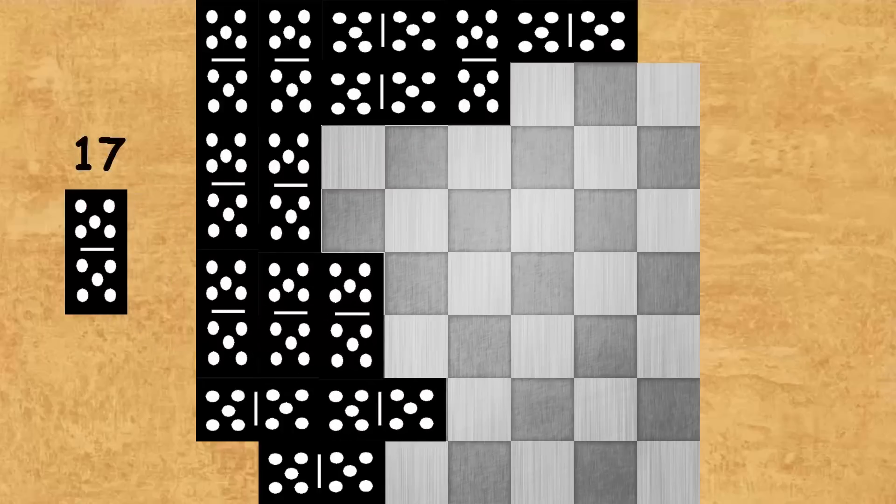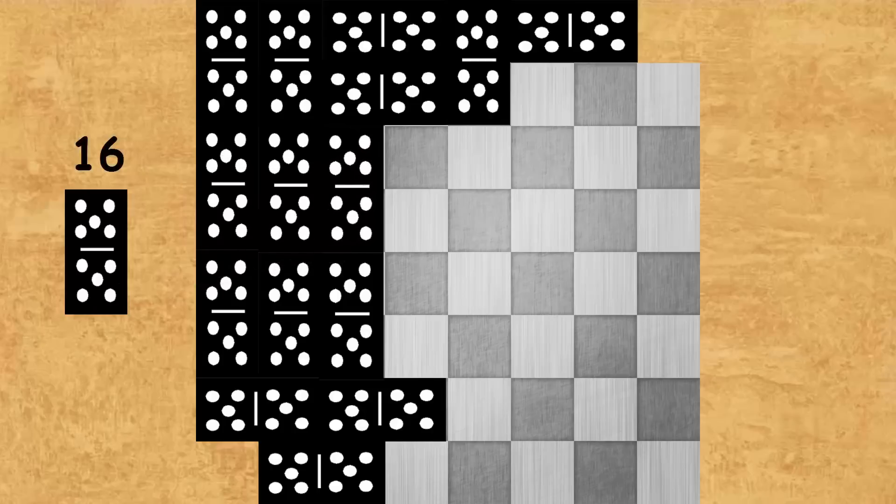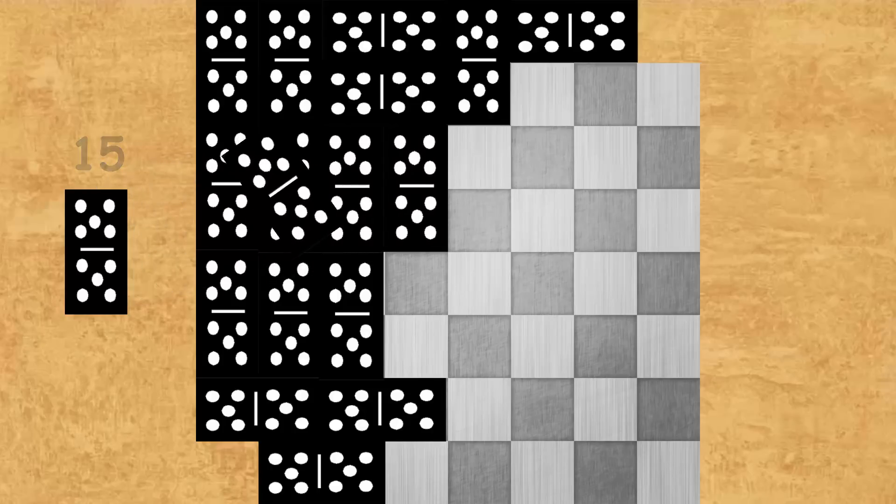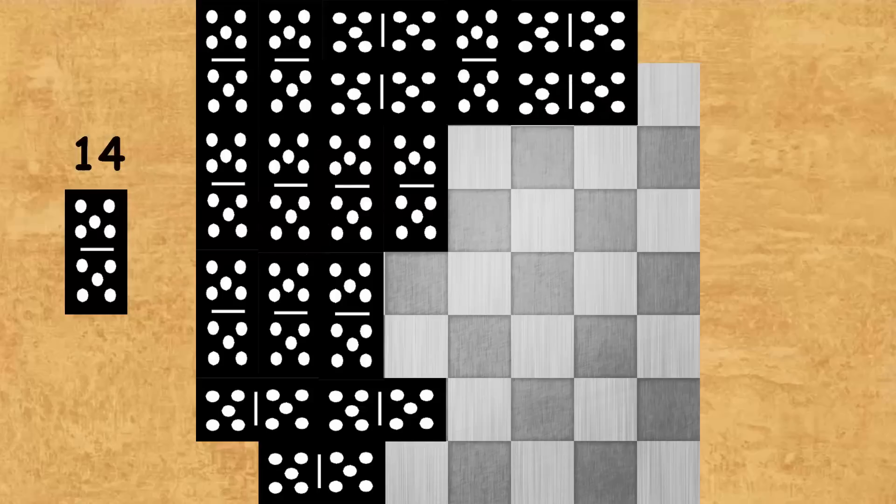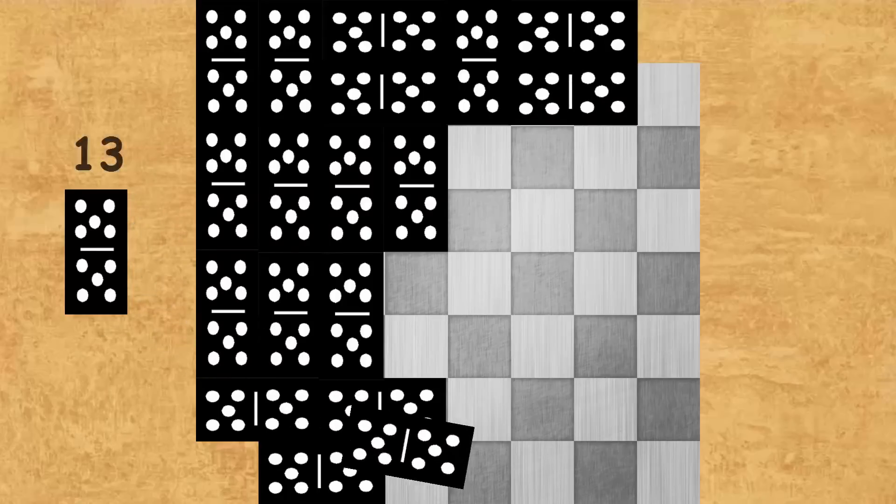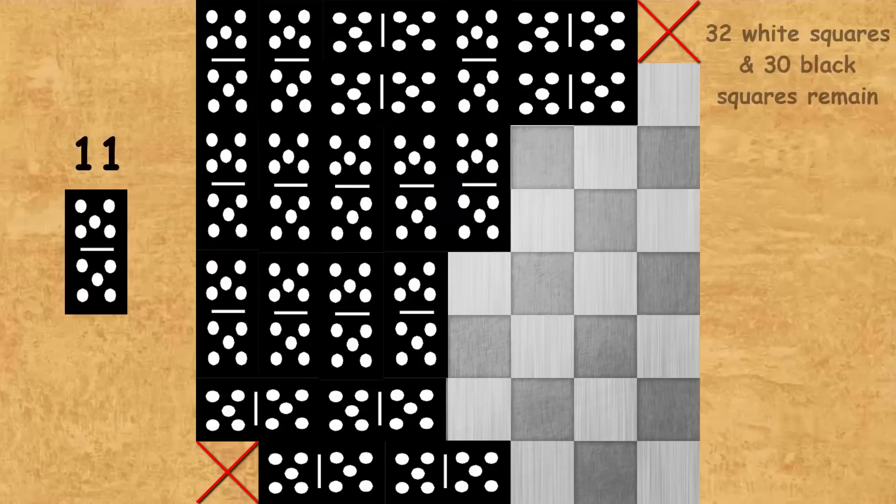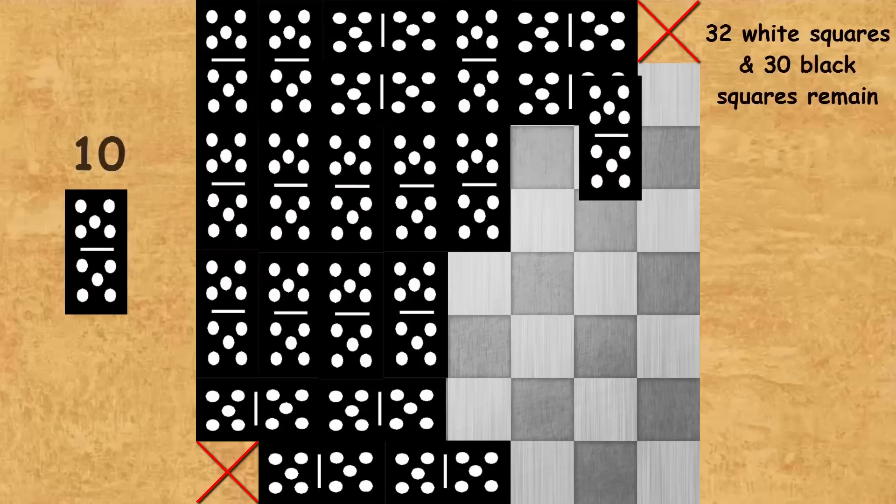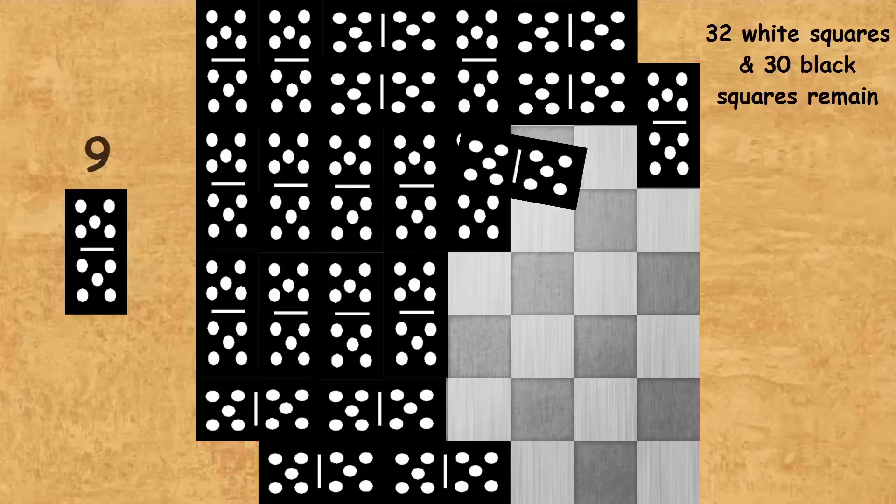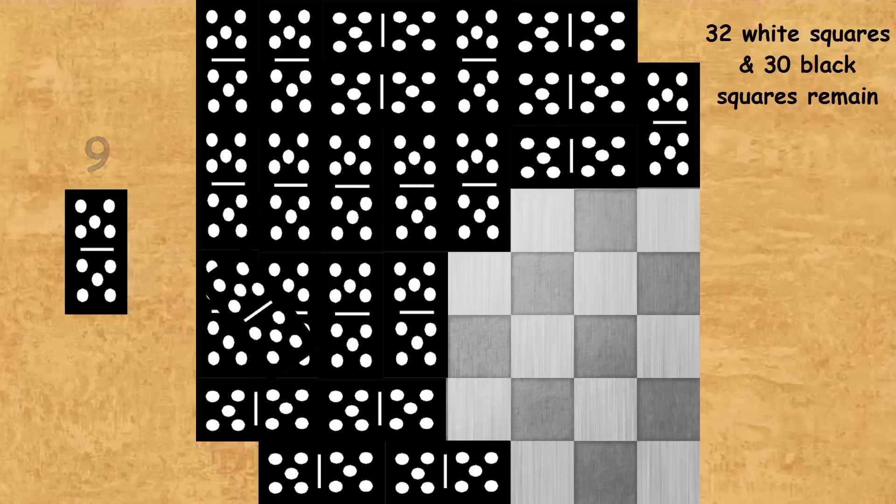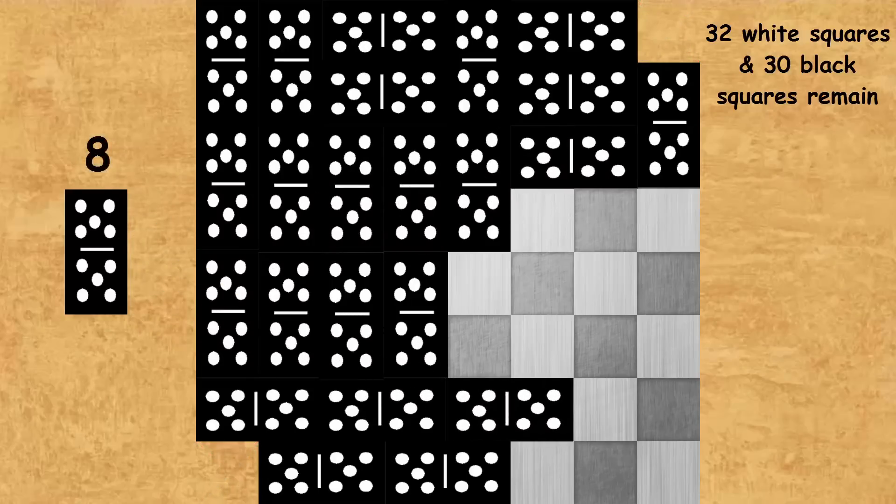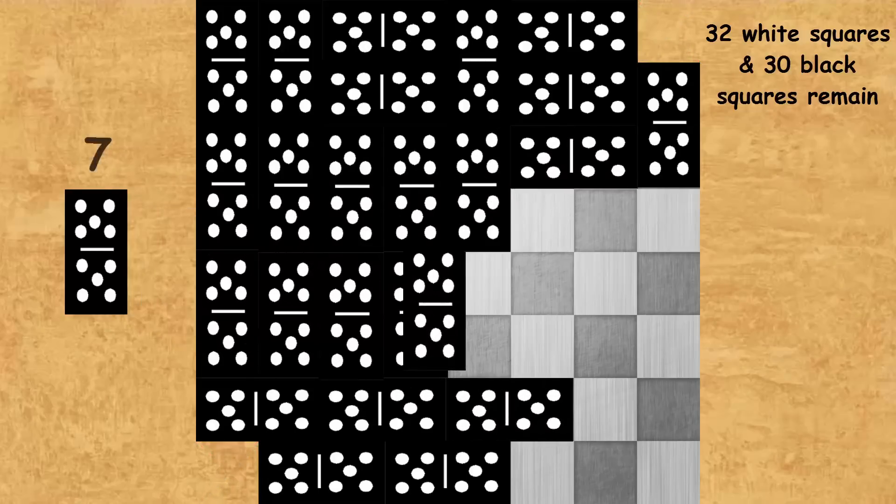But there is of course the more math approach, a mathematical approach where we can provide some true statements. In our case we've removed two black squares and so what now remains are 32 white squares and 30 black squares. And each domino, we know that each domino when placed, it's a 2x1 dimension so when it's placed it will always cover one white and one black square.